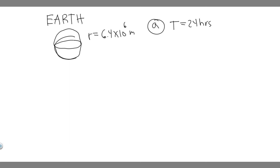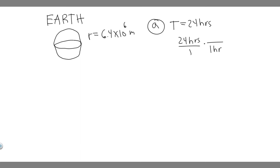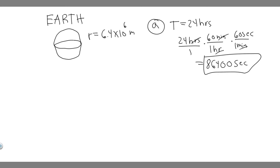That's how long it takes to go through one cycle or one revolution, but we want it in seconds. To convert it to seconds: 24 hours, and we know that for every one hour, one hour is equal to 60 minutes, and then one minute is equal to 60 seconds. The hours cancel and the minutes cancel, so basically just going 24 times 60 times 60 will give you the answer in seconds. When you do that, you get 86,400 seconds — that's how many seconds are in a day, which is just the period.